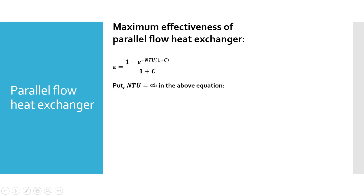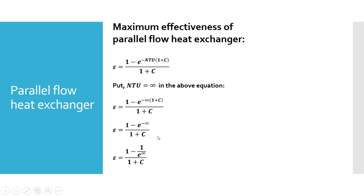In order to find out the maximum effectiveness, we can see that this particular term must be minimum or must be zero. For this term to be minimum, NTU has to be maximum — that is, infinity. NTU is the number of transfer units, so we substitute NTU equal to infinity. This gives e raised to minus infinity times (1 plus C), divided by (1 plus C). e raised to minus infinity is 1 upon e raised to infinity, and 1 upon infinity is 0.